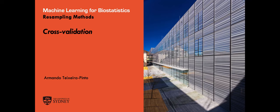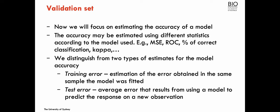Cross-validation is the second resampling method we're going to see in this unit. Cross-validation is usually used to evaluate the accuracy of the model, but also used to estimate tuning parameters, a little bit like bootstrapping. But we're going to focus now on measuring the performance of a model.